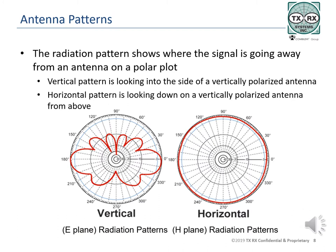For all antennas, gain is achieved by manipulating the radiation pattern, with power taken from one part of the pattern and added to another part or direction. The vertical radiation pattern is considerably different from the horizontal pattern. Picture looking at the antenna standing on the ground, looking into the side of the antenna. That is the vertical or E-plane of the antenna and from your observation point would show how the signal travels from the antenna to your right and left, straight towards you, and directly away from you or from the antenna.